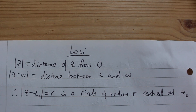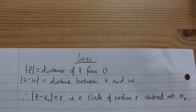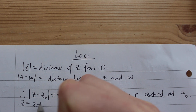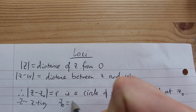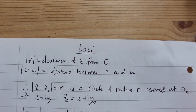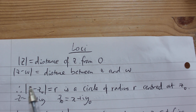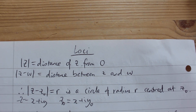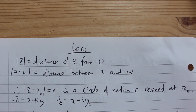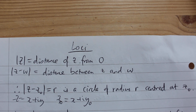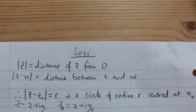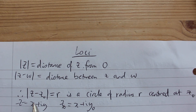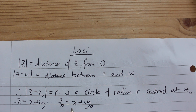To find the Cartesian equation, we replace z with x plus iy and z₀ with x₀ plus iy₀, then work out the modulus of z minus z₀. The general method for finding the Cartesian equation is to write everything in terms of real and imaginary parts.